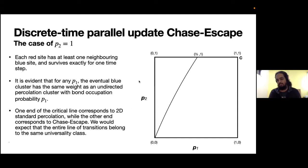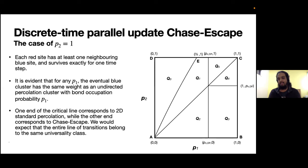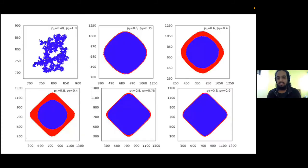This was the connection to the standard percolation that justifies why Chase-Escape is in the same universality class. However, the phase diagram of this model is actually quite rich. Without going into the details of what each of these phases mean, I will just leave you with a glimpse of typical clusters in these different phases and what they could look like.